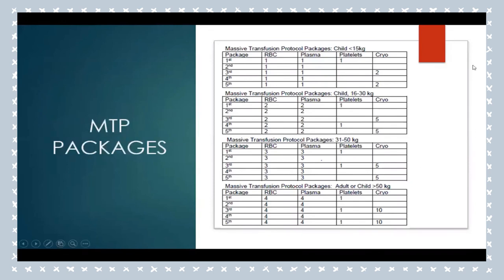The packages are based on weight. For a child less than 15 kg, the first packet includes one unit of packed cells, one unit of plasma and one unit of platelets — with actual volume dosed at 10 mL per kg. Once the first packet is started, the blood bank prepares the second, and so on. It is very important, especially given current blood shortages, to notify the blood bank when MTP is no longer required. The blood must be used or returned within four hours of taking it from the blood bank.